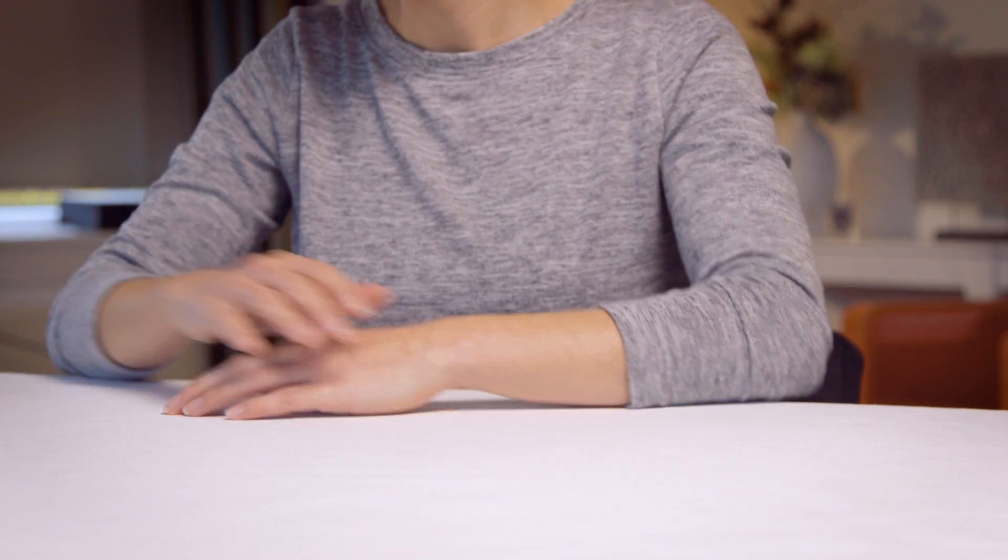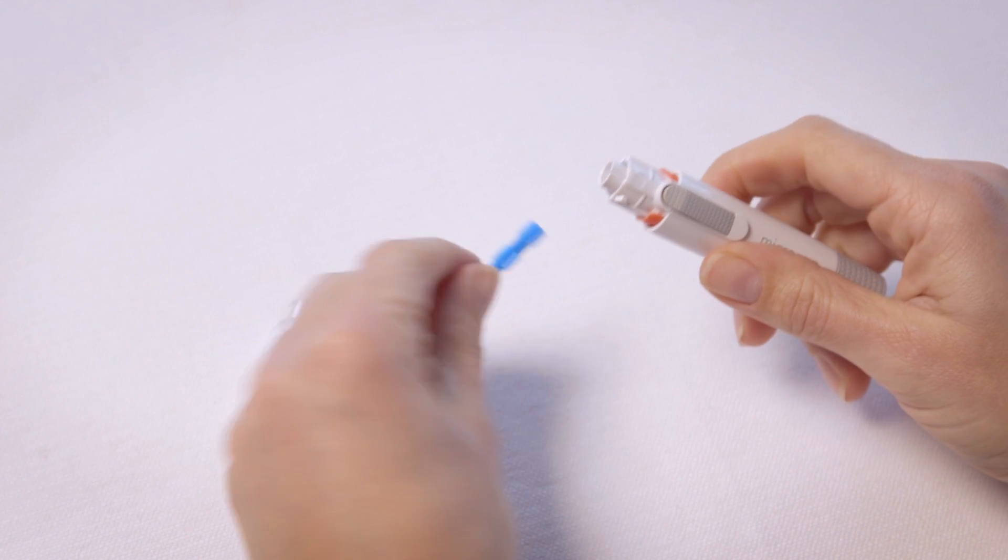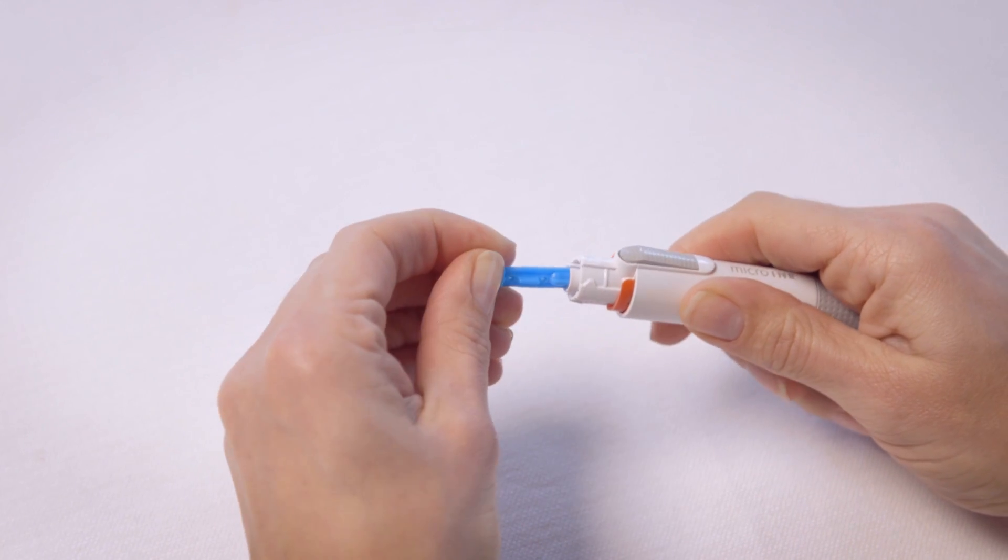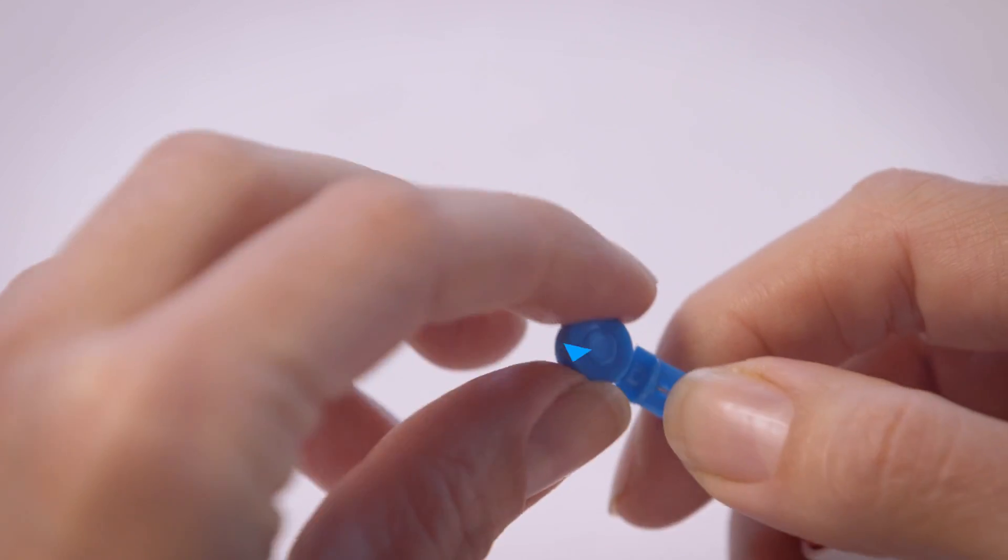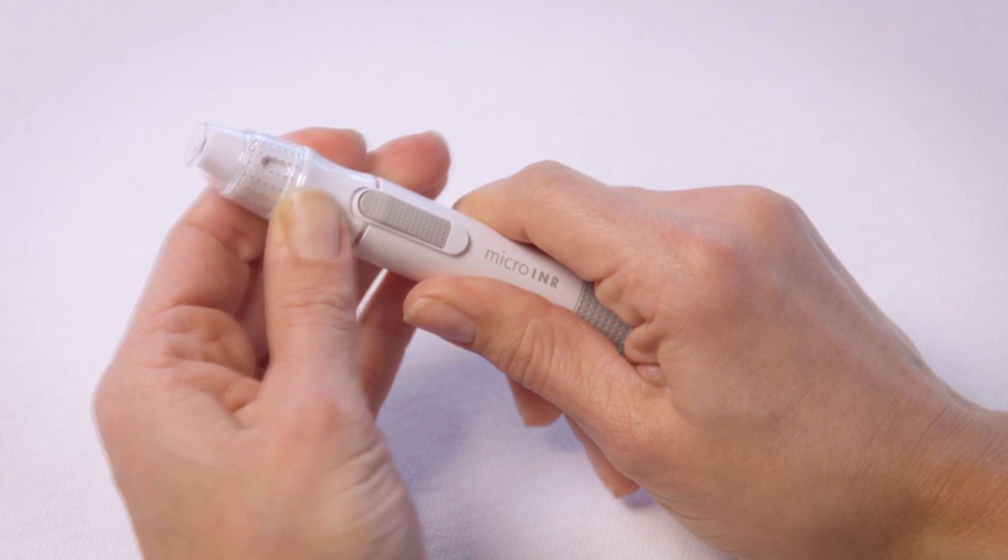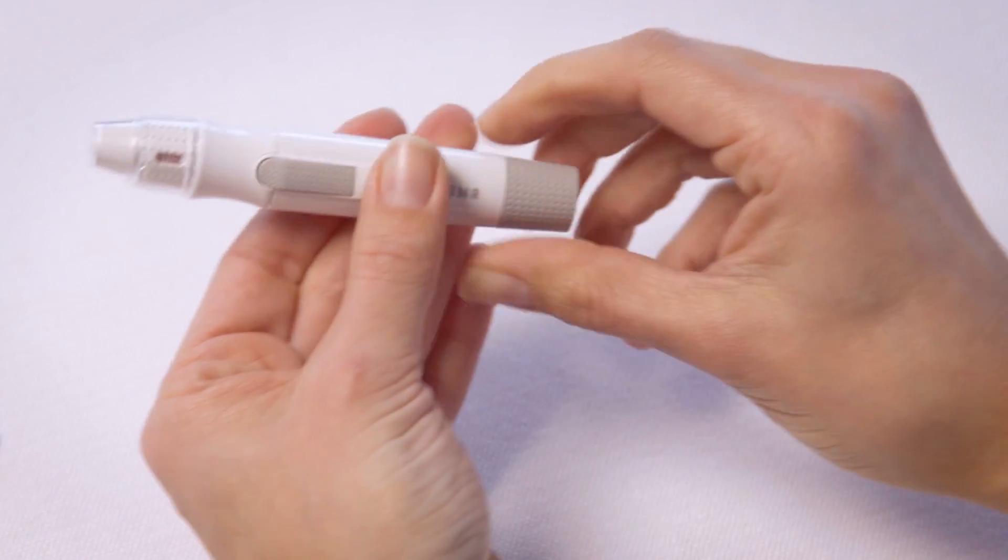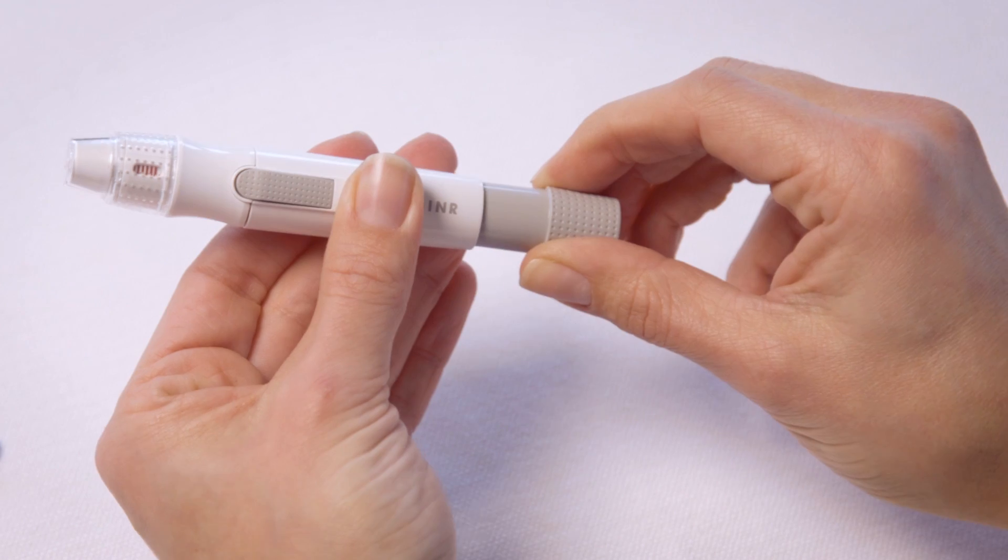Now we're going to prepare the lancing device. Remove the cap off the lancing device and insert the lancet. Remove the safety cap off the lancet with a rotation movement and place the cap back on the lancing device. Choose the right penetration depth and pull the plunger. The lancing device is now ready for use.